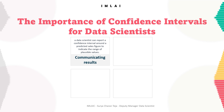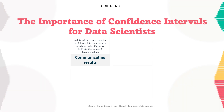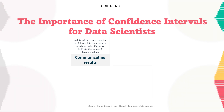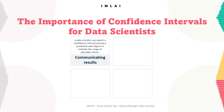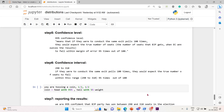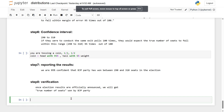For example, a data scientist can report a confidence interval around the predicted sales figure to indicate the range of plausible values. A confidence interval is a very important tool to understand.